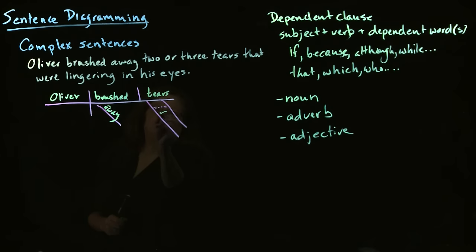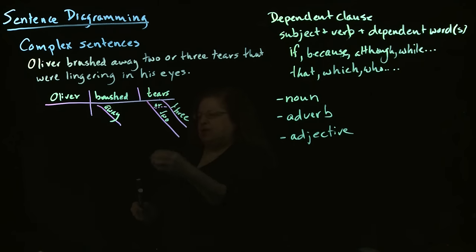And then we have our direct object, which is tears, which is modified by two or three. And now this is our main sentence.